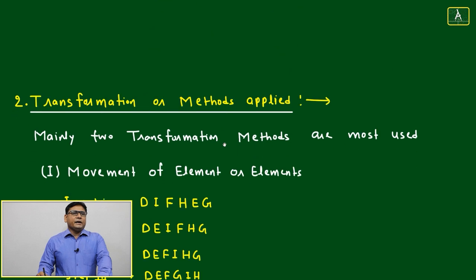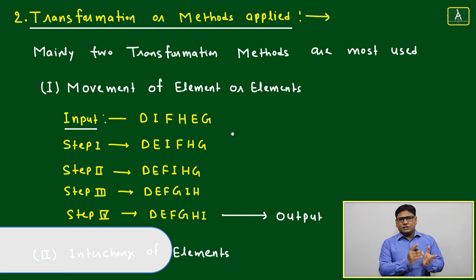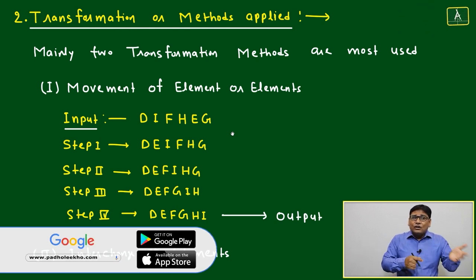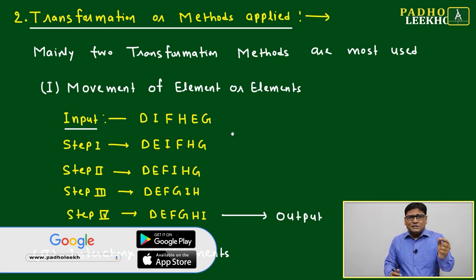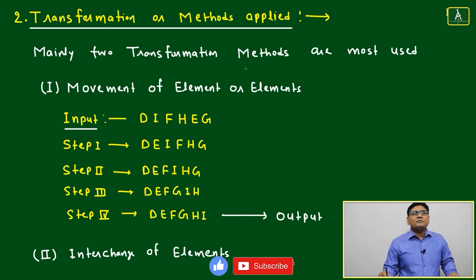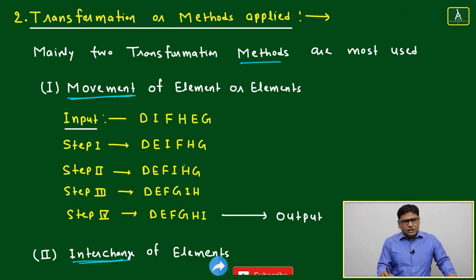Now we'll come to the second aspect of input-output. First aspect we understood - that is desired output. How to get desired output depends on the transformation or methods we are applying. Mainly two transformation methods are most used: one is movement of element, another is interchange of position of element.